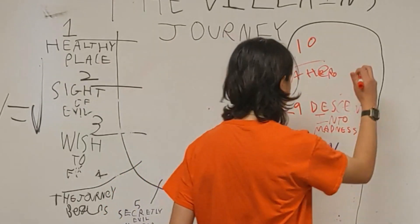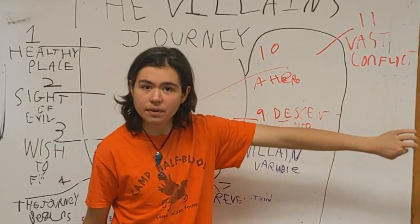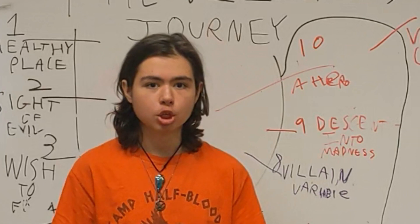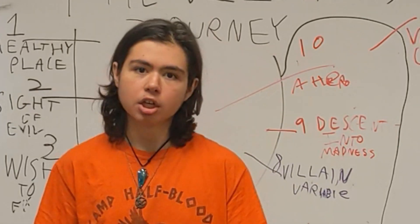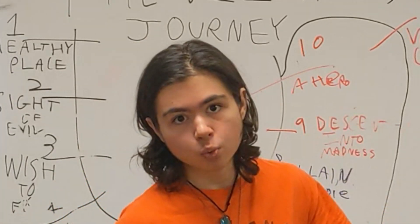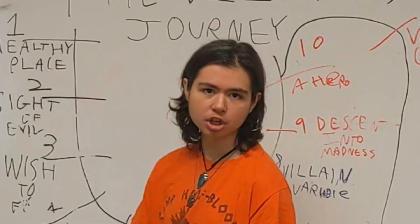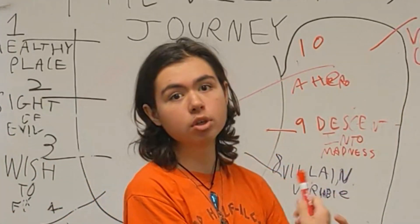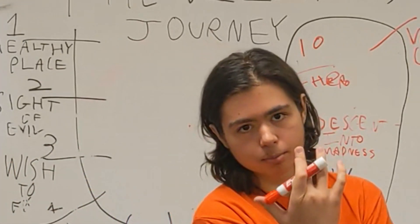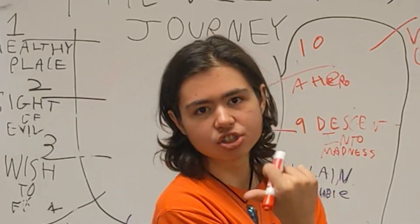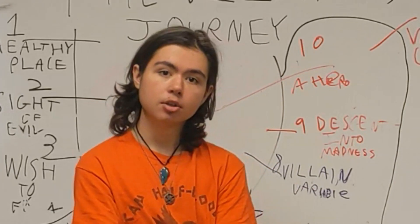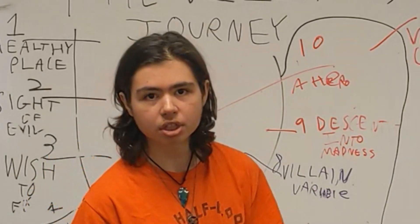When the hero has emerged and gotten the villain's notice, we get to Eleven: Vast Conflict. In this vast conflict, we see the hero's journey play out — this is where the bulk of the hero's journey will unfold. So if the star of this tale is the hero, this is most of the story. But if the star of this tale is the villain, well, this is only going to be a few minutes. What matters here is what it leads to.